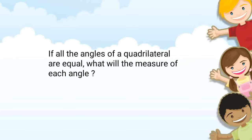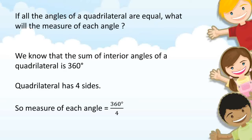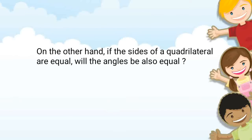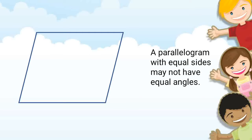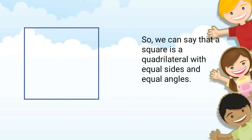If all angles of a quadrilateral are equal, what will be the measure of each angle? The sum of interior angles of a quadrilateral is 360 degrees, and a quadrilateral has four sides, so the measure of each angle equals 360 degrees divided by 4, that is 90 degrees. A parallelogram with equal sides may not have equal angles; if angles are also equal, then it must be a square. So a square is a quadrilateral with equal sides and equal angles.